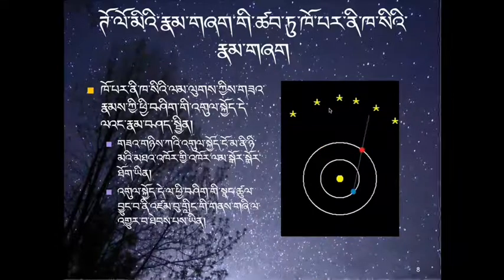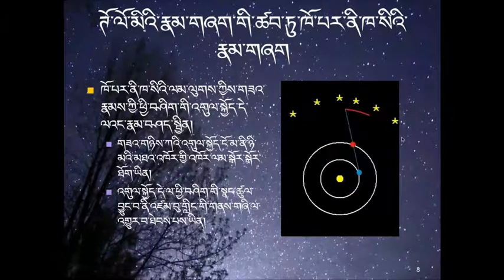Copernicus's theory was a very interesting and important theory, but in some ways it was not as good as Ptolemy's theory. In particular, it did not accurately predict the positions of the planets. Ptolemy was more accurate.